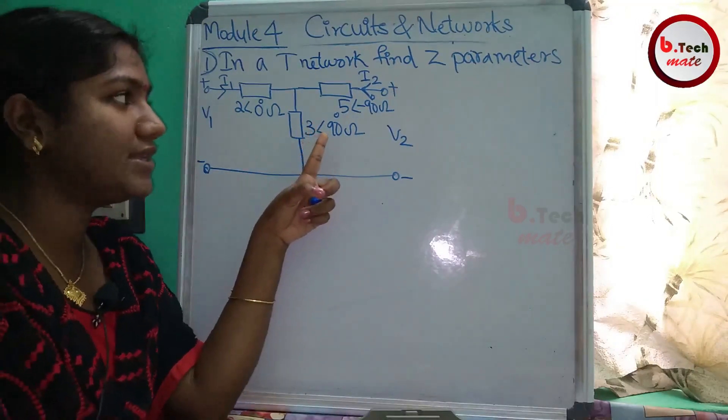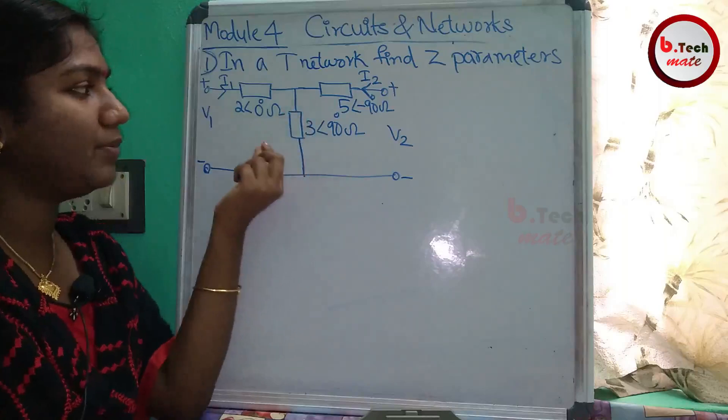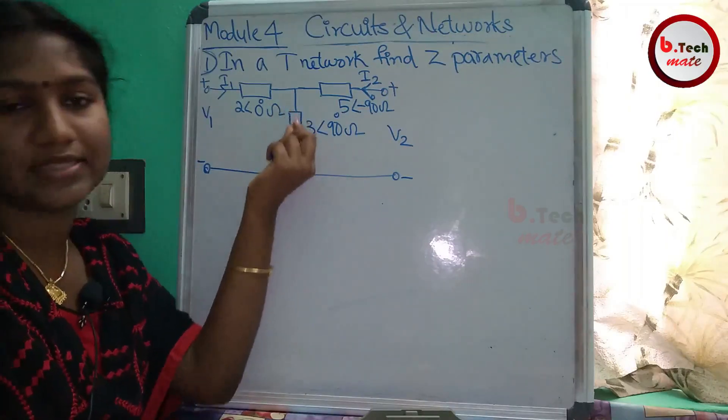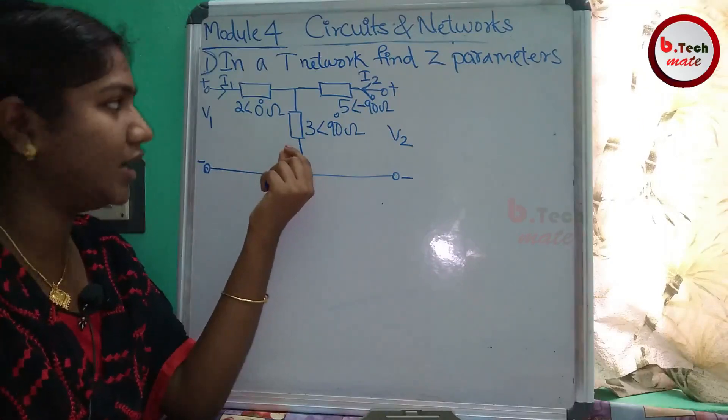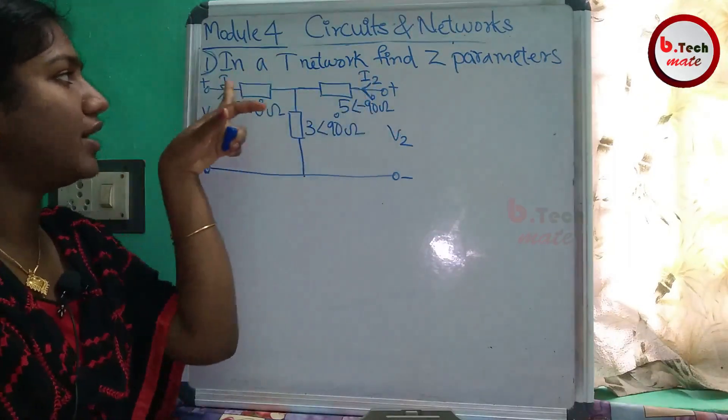We can find the AC circuit. We can find the Z-parameters. For normal DC circuits, we have V1, V2, I2, and I1.